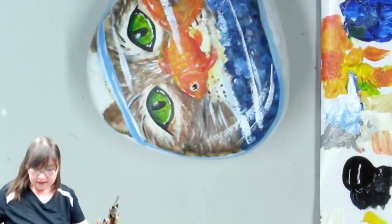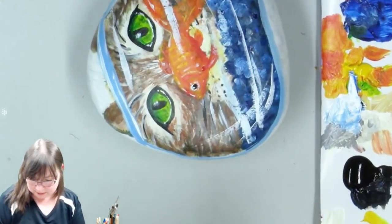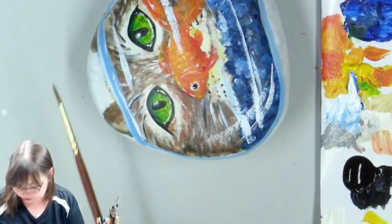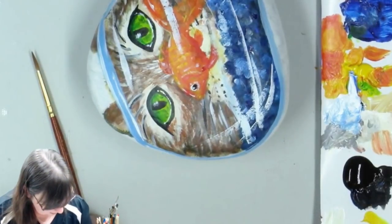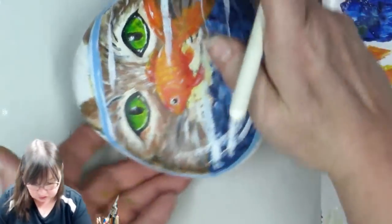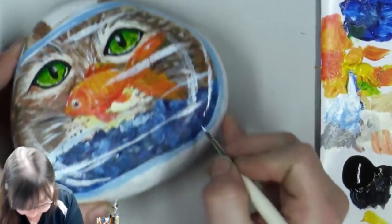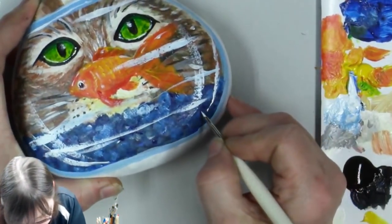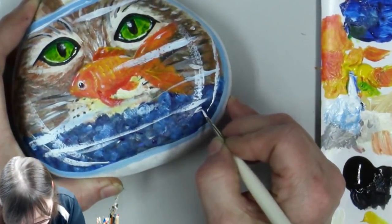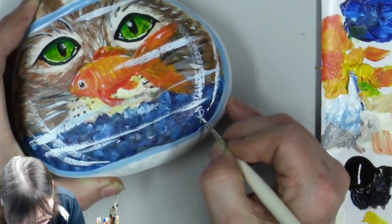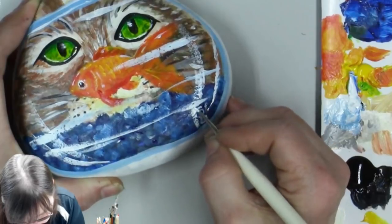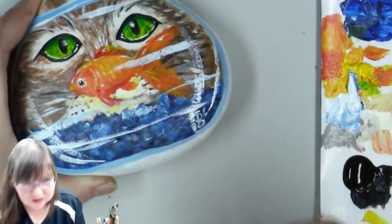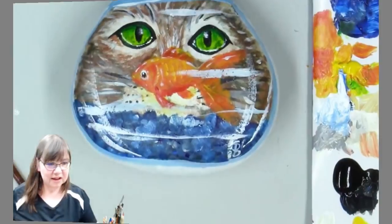I'm going to sign this because I'm really proud of this. Get this goldfish and kitty cat in the fishbowl. So I'm going to put my little signature on here, which is just my S. Just like that. Looks like it's part of the reflection. So I hope that you enjoyed this.